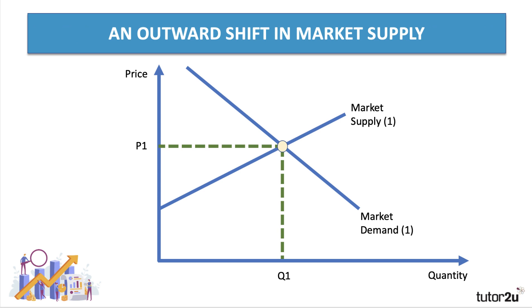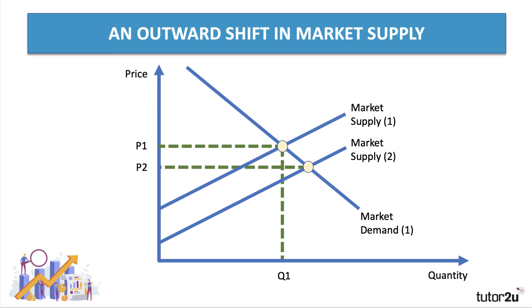How do we show this in a diagram? An outward shift of supply: if the initial equilibrium is at P1 and Q1, an outward shift moves market supply to MS2, and other things being equal, that gives a new equilibrium at a lower price P2 and a higher quantity Q2. You might also bring in welfare concepts here such as consumer and producer surplus.